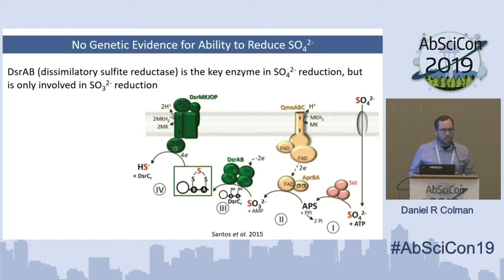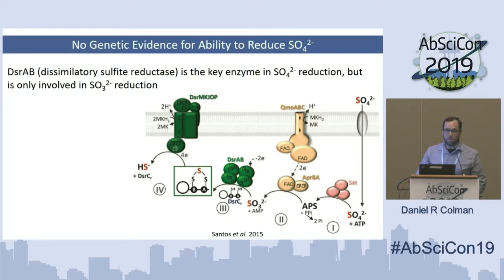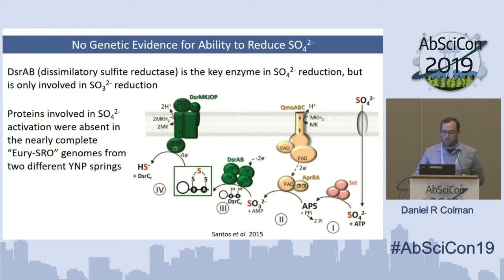One of the ways we can get an idea about what these organisms are doing is by looking for key genes involved in metabolism. The dissimilatory sulfite reductase enzyme is one of the key genes for sulfate reduction, but it's important to note that it's actually involved in sulfite reduction, not sulfate reduction per se. As this diagram shows, there are several steps involved in sulfate reduction that include the activation of sulfate early on, followed by sulfite reduction via DSR-AB. The proteins involved in sulfate activation were absent in these URI SRO genomes recovered from Yellowstone hot springs — despite the fact that they're nearly complete genomes — suggesting that they did not have the capacity to activate sulfate, but rather were just reducing sulfite.